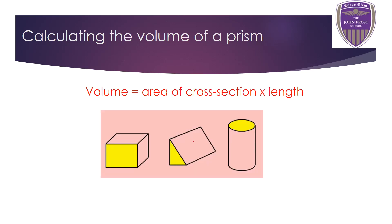For a cuboid we need the area of the rectangle, which is length times width. For a triangular shape, it's base times height divided by 2, or half base times height. To find the area of a circle, we multiply pi by the radius squared — pi r squared. That covers the area side of these questions.